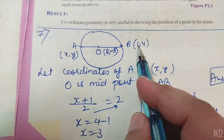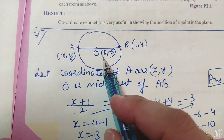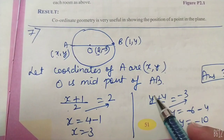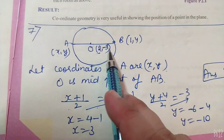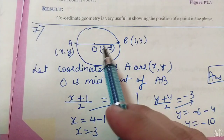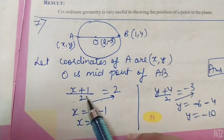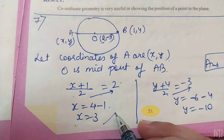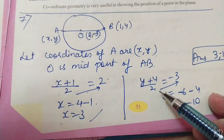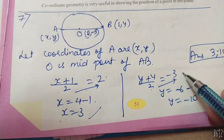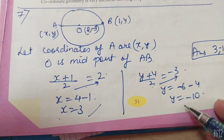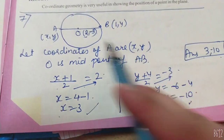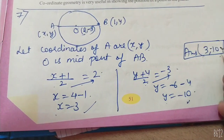Midpoint formula लगाते हैं: (X + 1)/2 = 2, similarly (Y + 4)/2 = -3. Y coordinate को Y से compare किया, और X को X से. Cross multiply किया: 2×2 = 4, और 1 वहाँ जाके minus हो गया, X = 3. और यहाँ 2 को -3 से multiply किया = -6, और 4 वहाँ जाके minus हो गया, Y = -10. तो answer आ गया A = (3, -10).